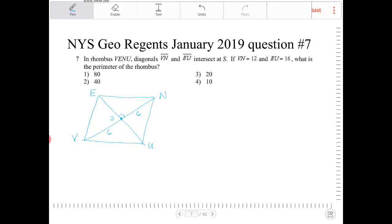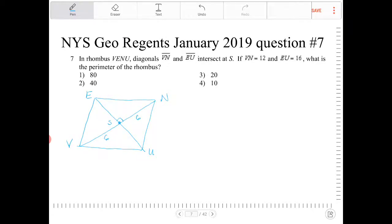They're also telling us that EU is equal to 16, so therefore ES must equal 8, and SU must equal 8.